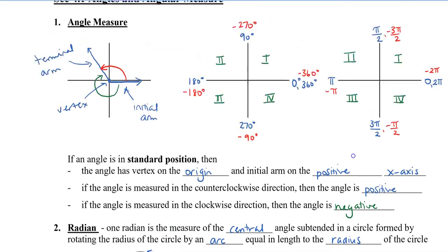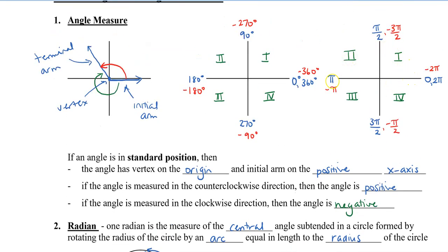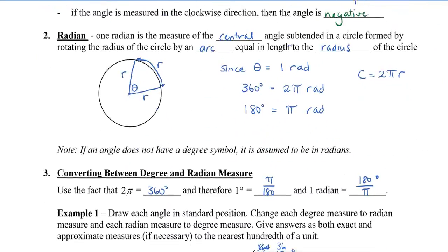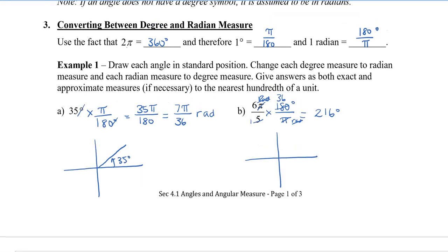Going back to the example, my value is 6π over 5. Knowing that halfway around is π, to compare I convert π to have the same denominator: 5π over 5. Since 6π over 5 is just a little bit bigger than 5π over 5, that angle goes just past the π mark into the third quadrant.